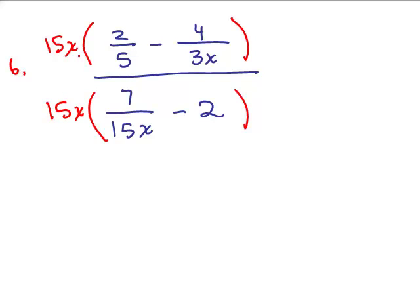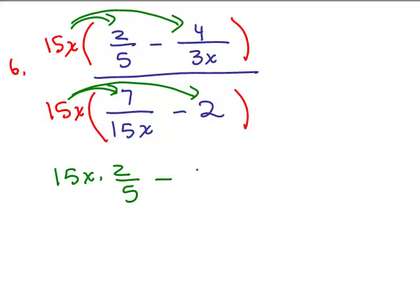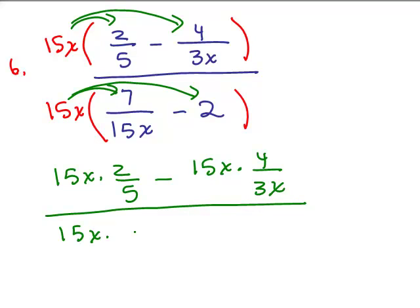Now, the reason this method works is because if that's the least common denominator, each denominator will cancel into that, and we will be left with something that is not a complex fraction. So that's our next step. We need to distribute that 15x to all the terms in the parentheses. So we've got 15x times 2 fifths minus 15x times 4 over 3x, all over 15x times 7 over 15x minus 15x times 2. Notice 2 is not a fraction, so nothing's going to cancel when I do the 15x times 2 because there was no fraction there to begin with.